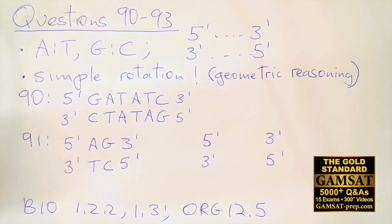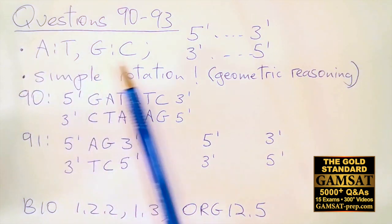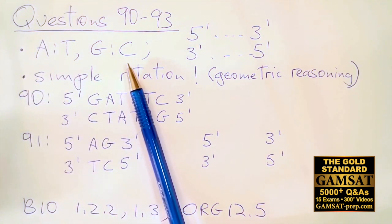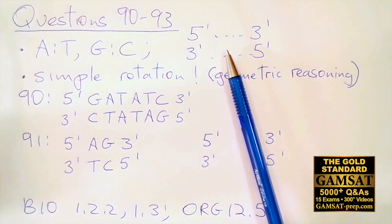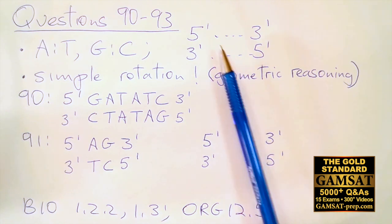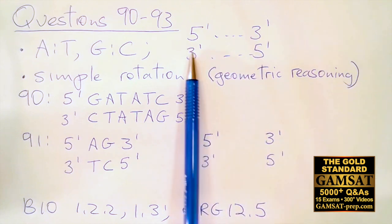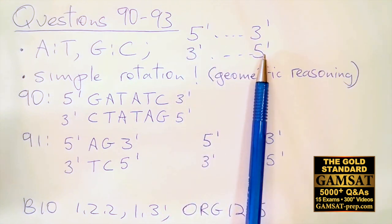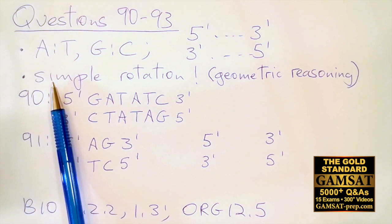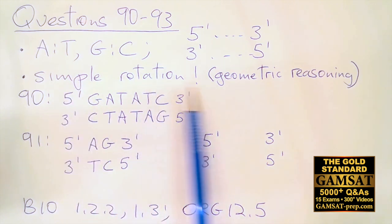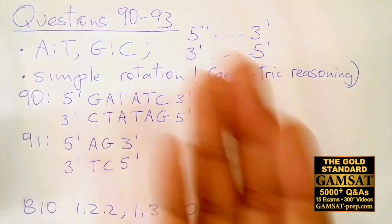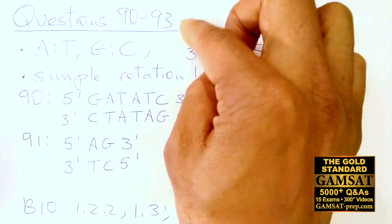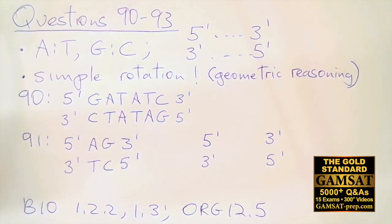The rules that ACER gives include A to T and G to C — A-T has two hydrogen bonds and G-C has three hydrogen bonds. Additionally, ACER specifies anti-parallel binding of DNA strands, with one strand running 5' to 3' and the other 3' to 5'. Finally, ACER gives an example of simple rotation — geometric reasoning showing how the DNA molecule can be turned around, not flipped, just simply rotated. With these simple rules, all the questions can be answered.